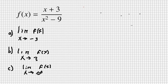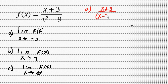Let me begin with part a. We know that f of x is equal to x plus 3 over x squared minus 9. I notice that the denominator is a difference of squares, so I might as well factor it. This is going to become x plus 3 over the quantity x minus 3 times x plus 3.